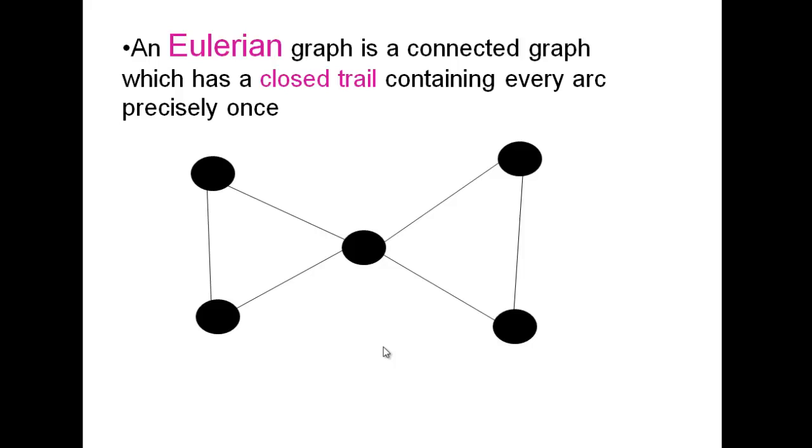An Eulerian graph, and I'll explain a little bit more about where this term comes from, it's actually relevant to that very first graph with the riverbanks and the islands we looked at. An Eulerian graph is a connected graph which has a closed trail containing every arc precisely once. If you can't remember what a closed trail is, go back.